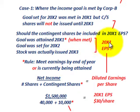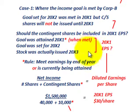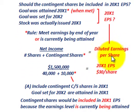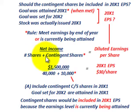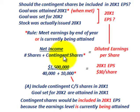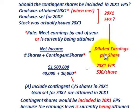Looking at diluted earnings per share for 20x1: that's taking net income for Corporation A and dividing it by the number of shares of common stock outstanding for the year, plus the contingent shares — those 10,000 extra shares that Corporation A will issue to Corporation B provided they met the income goal. Net income divided by average common stocks outstanding plus contingent shares equals diluted earnings per share.